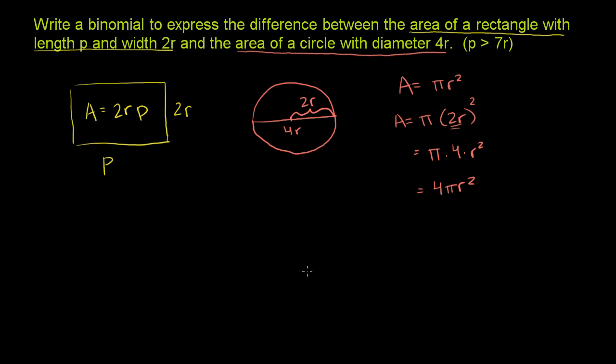And then we want to find the difference. So to find the difference, it's helpful, just so we don't end up with a negative number, to figure out which of these two is larger. So they're telling us that p is greater than 7r. So let's think about this.